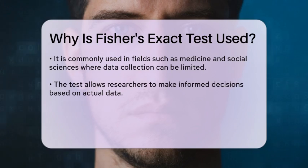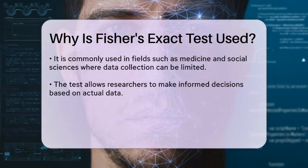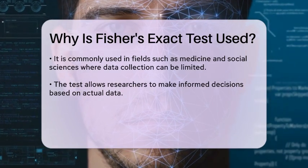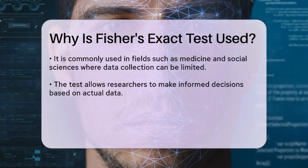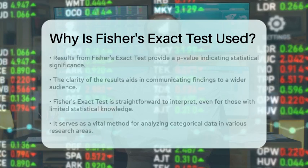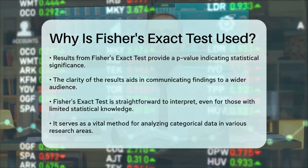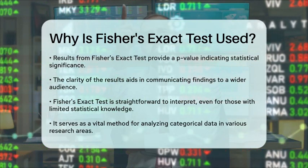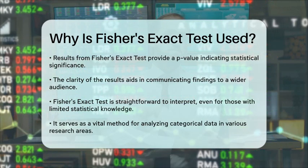Additionally, Fisher's Exact Test is straightforward to interpret. The results yield a p-value that indicates whether there is a statistically significant association between the two variables being studied. This clarity is beneficial for researchers who need to communicate their findings to a broader audience, including those who may not have a strong statistical background.